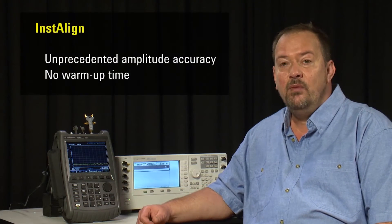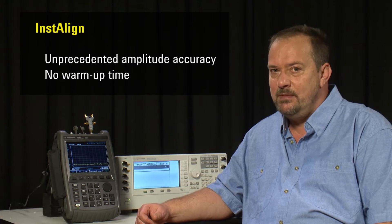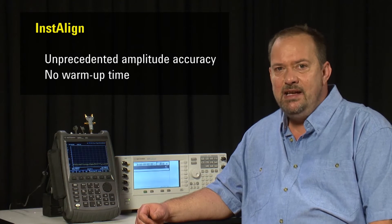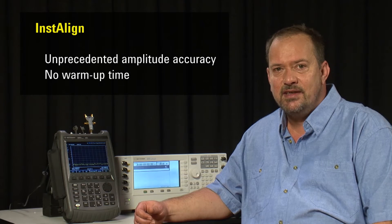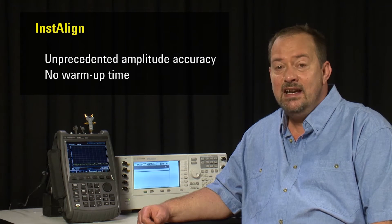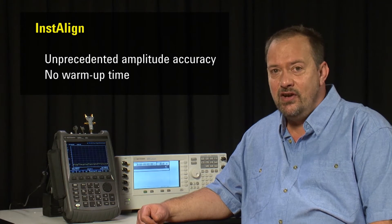Agilent's Instalign technology performs a realignment before every sweep. This results in extremely high amplitude accuracy at all times, regardless of ambient temperature and regardless of how long it has been turned on.